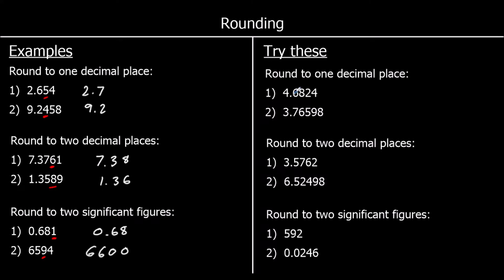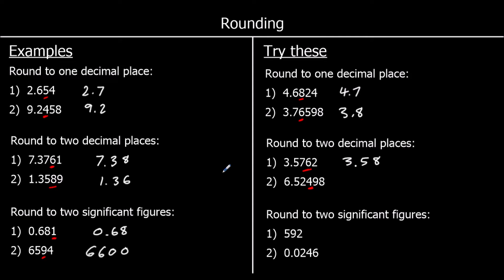Rounding to one decimal place: we want one number after the decimal point. Is it closer to 4.6 or 4.7? This one is 4.7 — it is 5 or above. The second one is going to be 3.7 or 3.8 — it is 5 or above, so it's 3.8. And the next one is going to be 6.52 or 6.53 — it's not 5 or above, so it stays as 6.52.